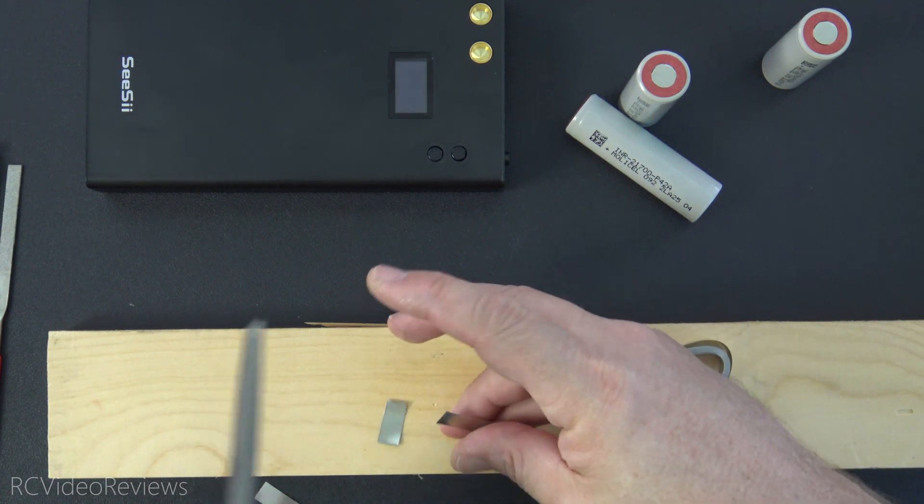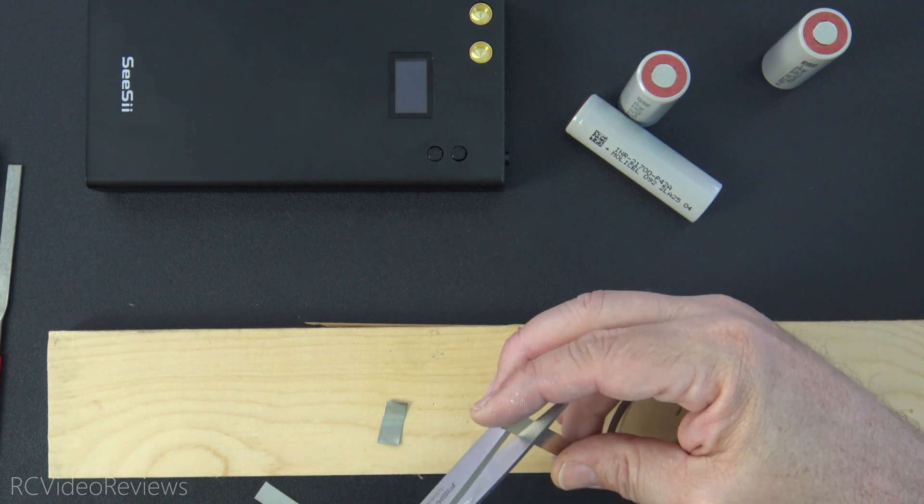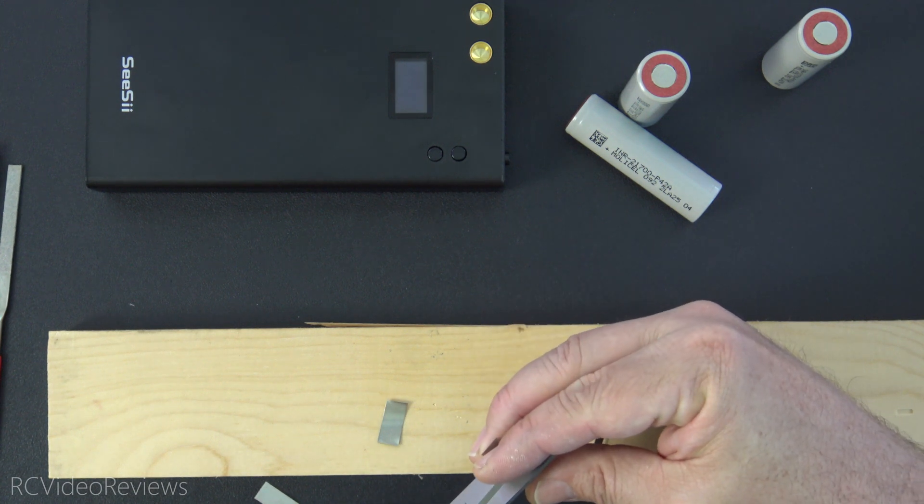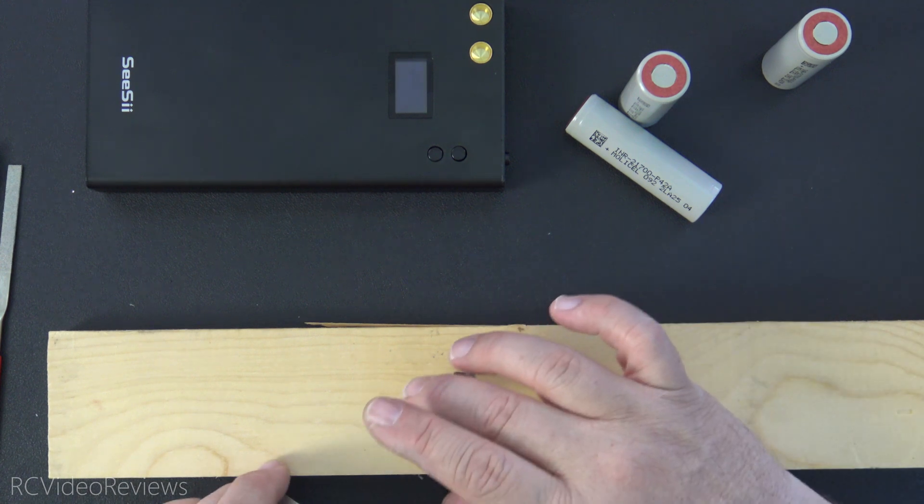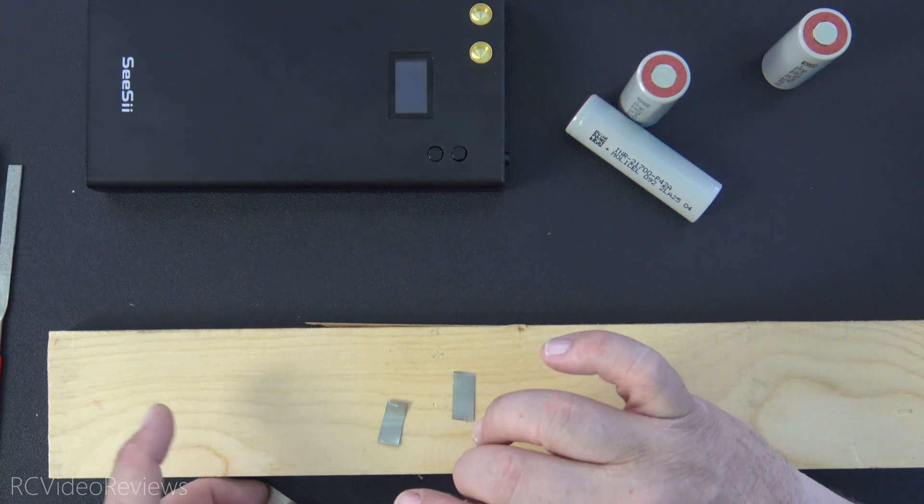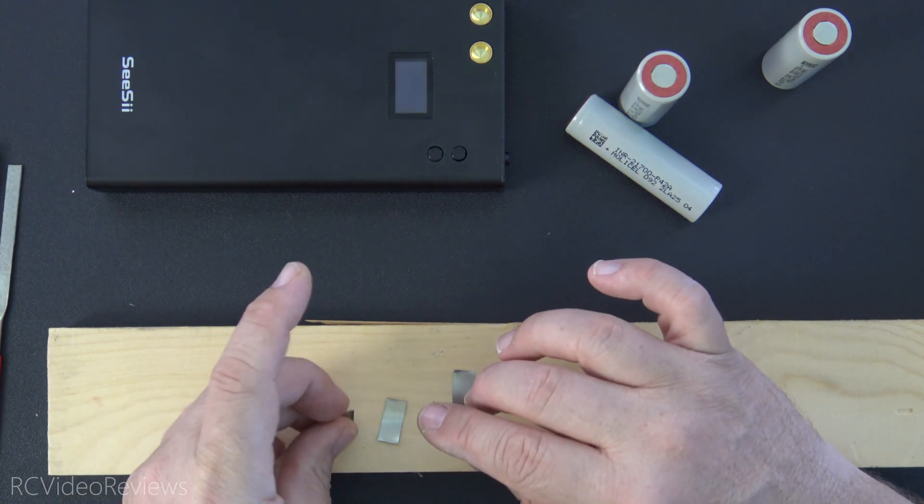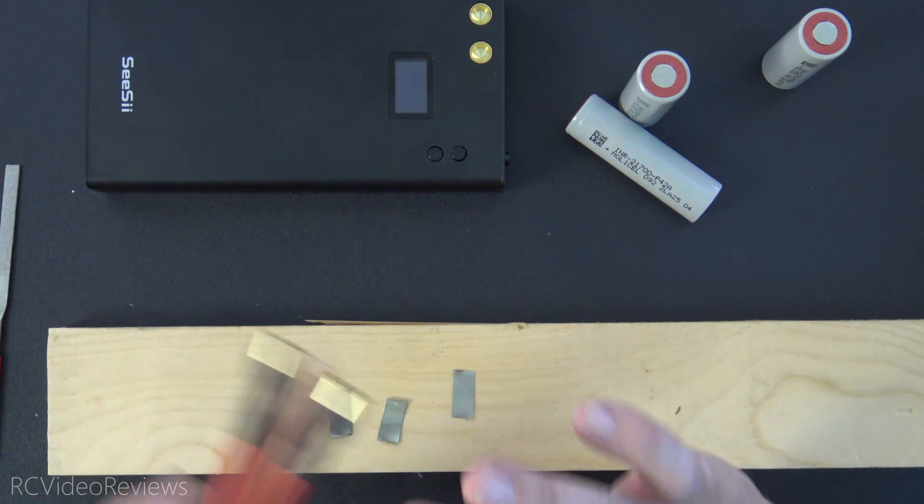For my batteries, in case you're interested for the channel, I've got a couple of MalaCell 4200 milliamp hour cells. They're going to be going in my Heatwing T1 Ranger and I want to do that because I want to get some extra endurance out of that plane.